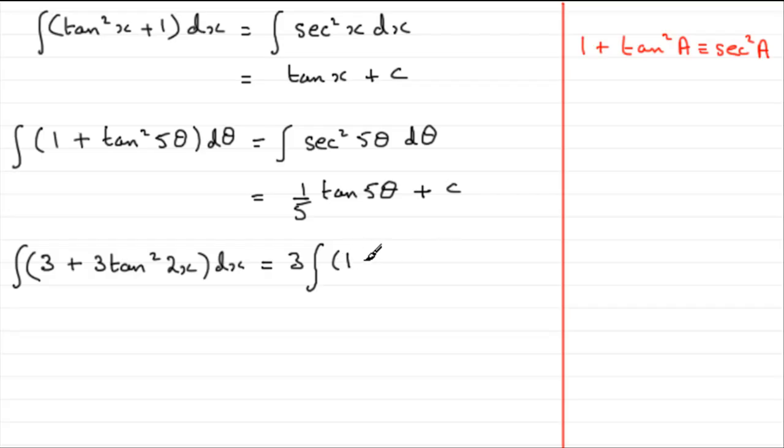And what we would have inside is 1 plus tan squared 2x. And we're integrating that with respect to x. So again, can you see that the a here is the 2x. So what we have is 3 times the integral of sec squared 2x. And that's integrated with respect to x.